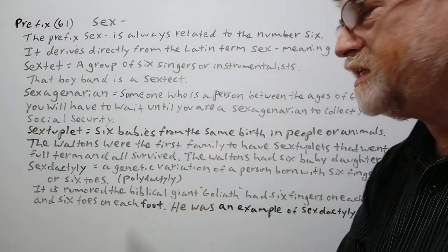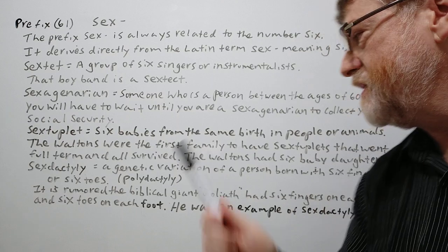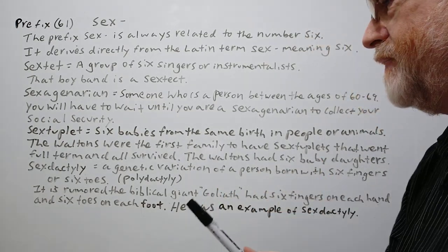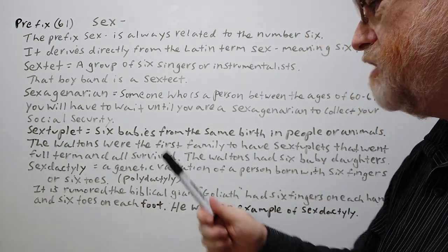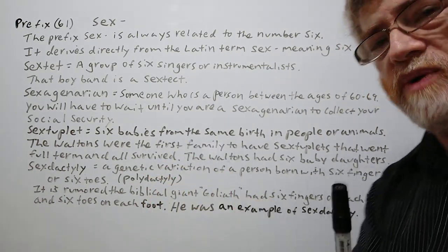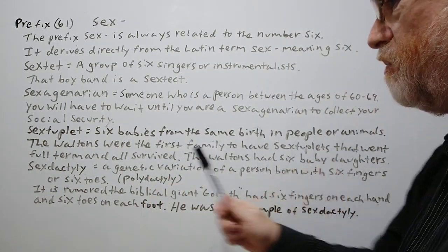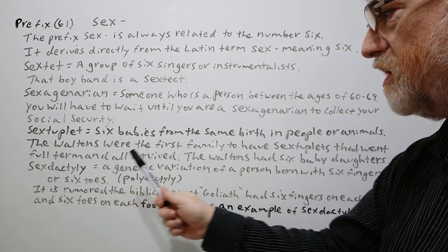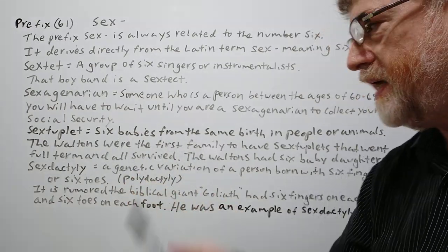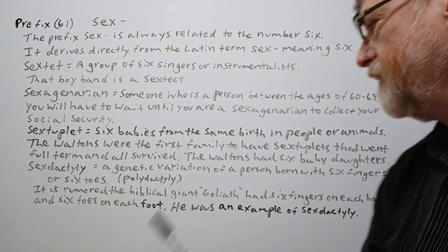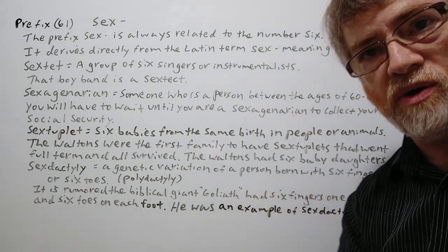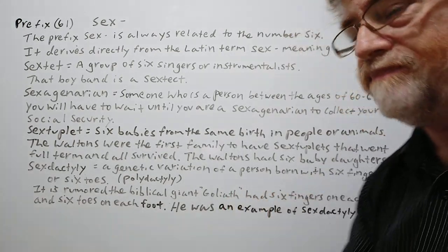Next is sextuplet — six babies from the same birth, in people or animals. Example: the Waltons were the first family to have sextuplets that went full term and all survived. Full term means all nine months. The Waltons had six baby daughters, so they were all girls.